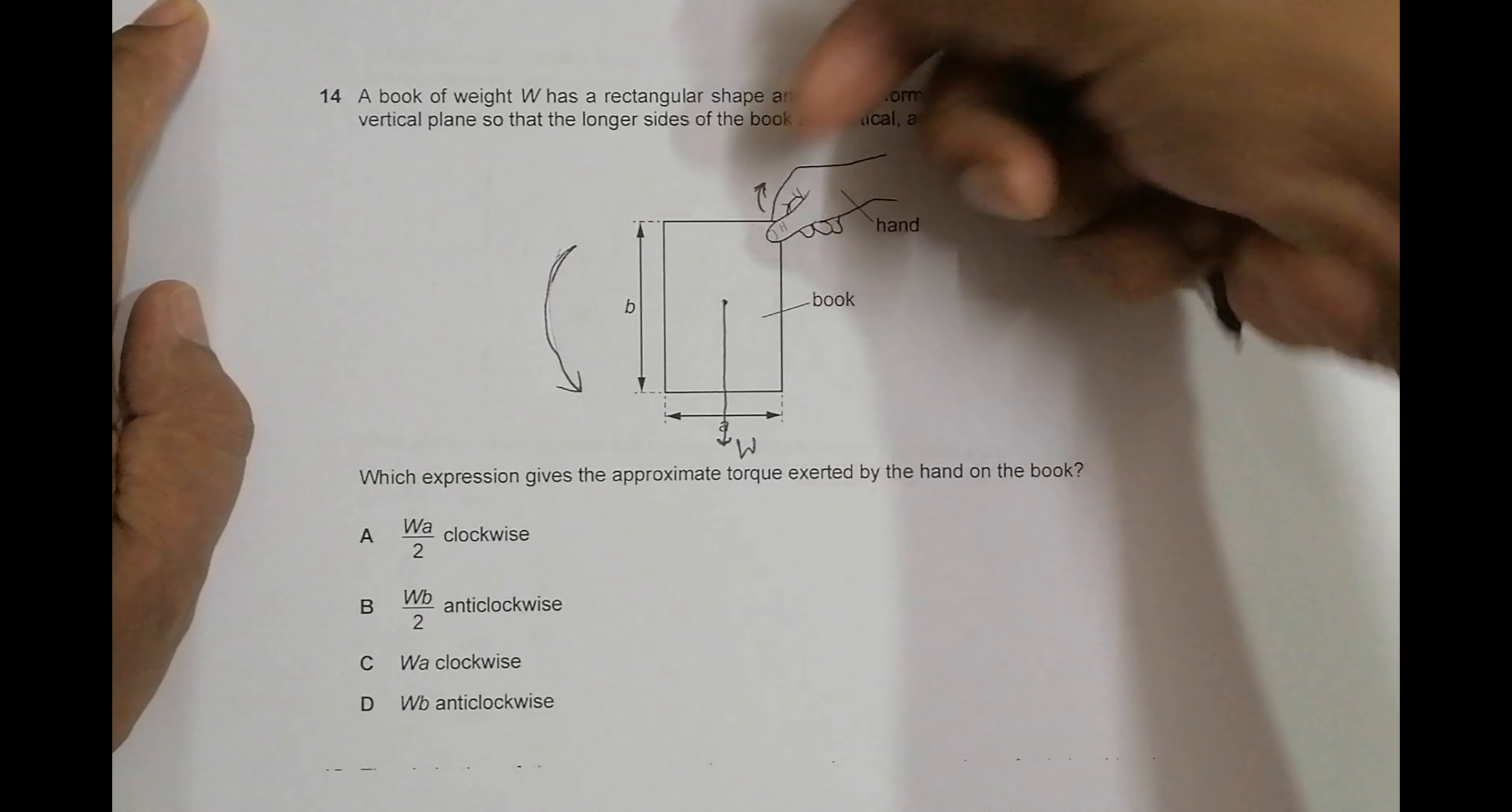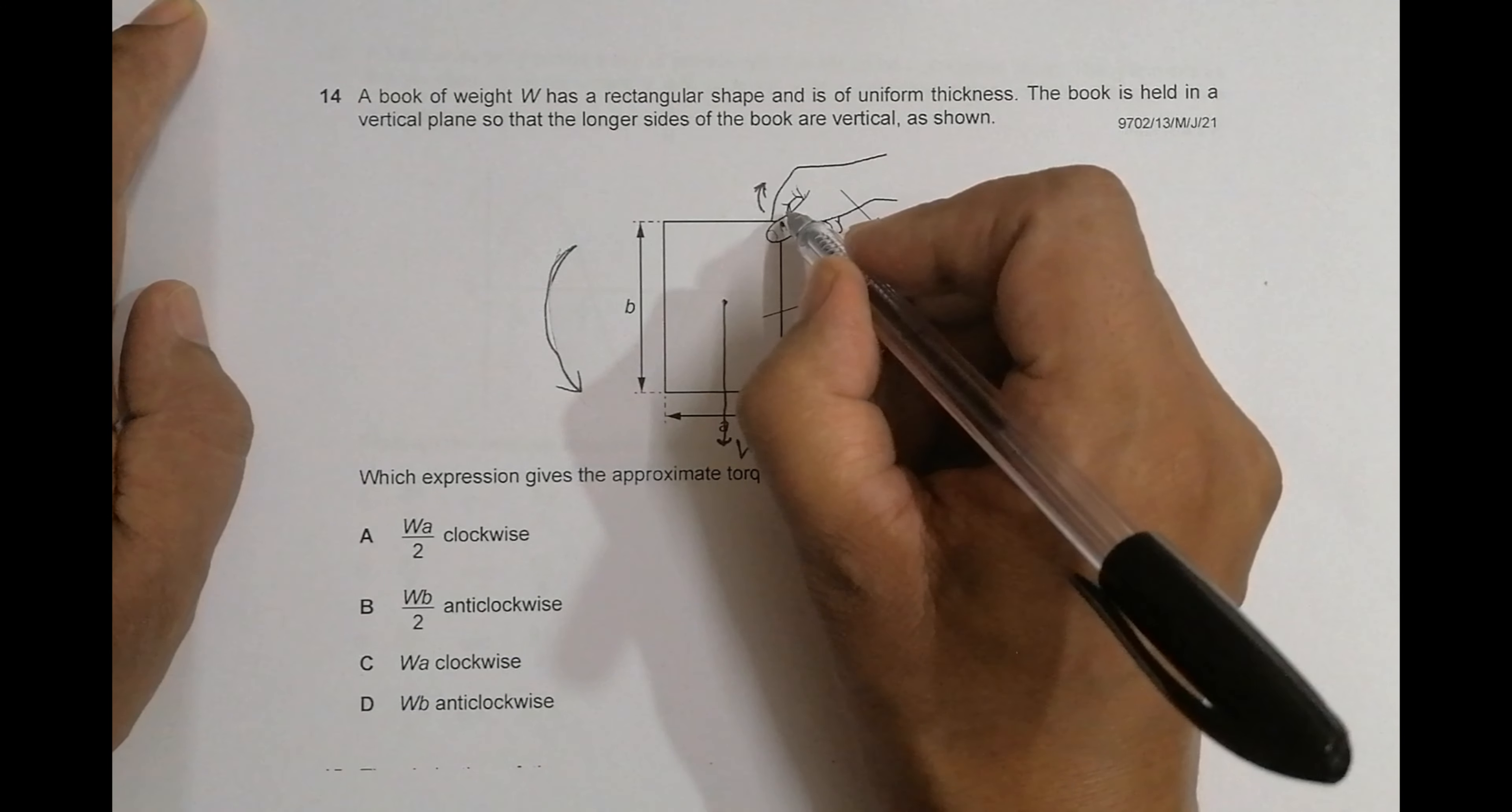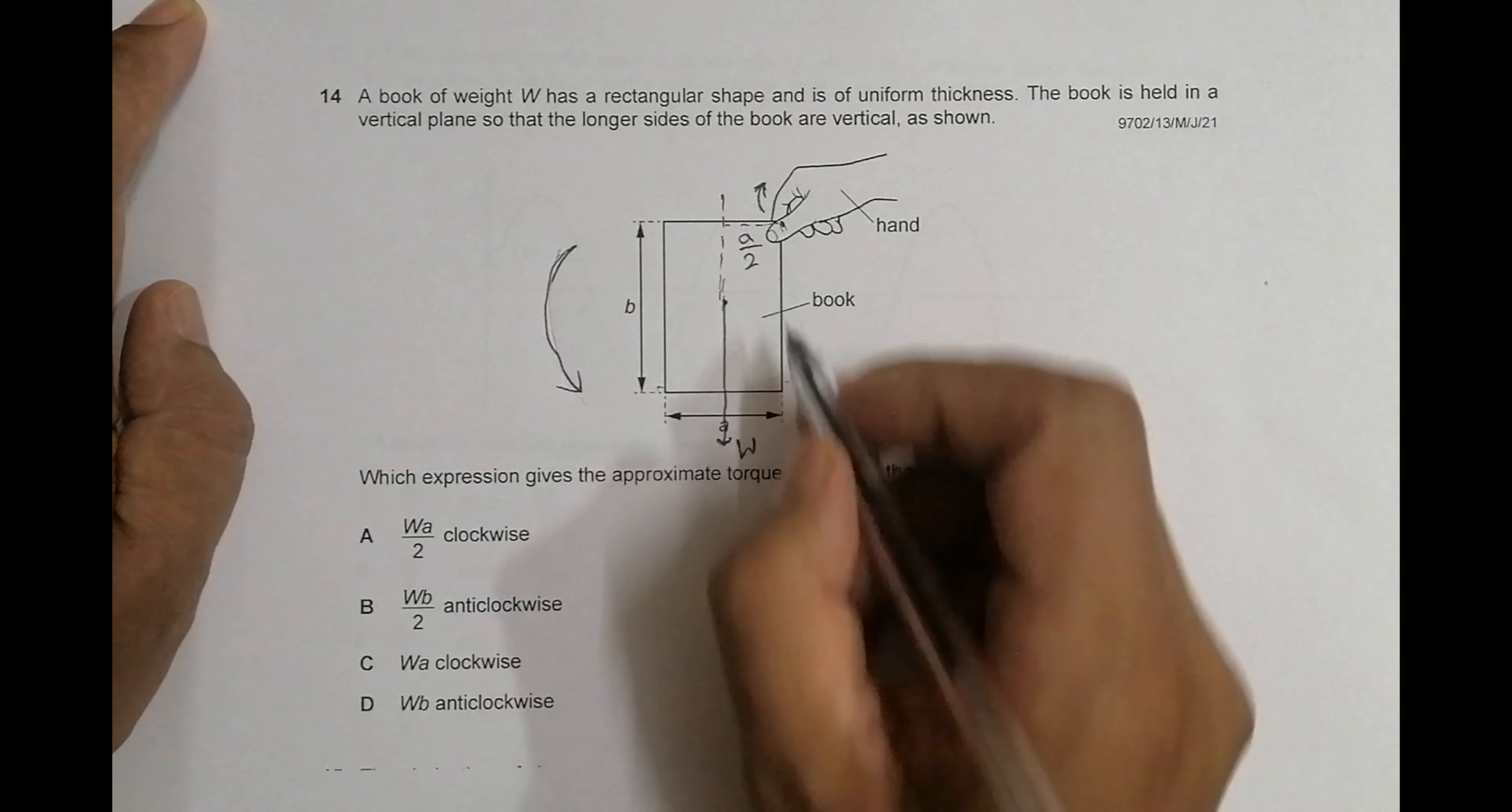Let me say the fulcrum is somewhere here. When we have this thumb over here, the fulcrum will be slightly behind the thumb because it has to raise like this. The fulcrum is somewhere within this thumb. If I draw the line like this, this distance will be equal to a by 2. The breadth is a by 2.